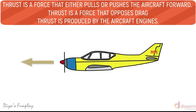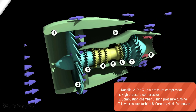Thrust is a force that either pulls or pushes the aircraft forward, opposing drag, and is produced by the aircraft engines. Thrust acts through the propeller shaft or the centerline of a jet engine. A piston engine needs a propeller to convert the power output of the engine into thrust. Power is generated by the piston engine and transmitted through a shaft to rotate the propeller, and this turning effect creates a pull or push force called thrust.